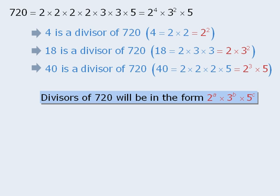Now since the prime factorization of 720 has 4 2's, a can be any number from 0 to 4. Since the prime factorization of 720 has 2 3's, b can equal 0, 1, or 2. And since the prime factorization of 720 has 1 5, c can be either 0 or 1.